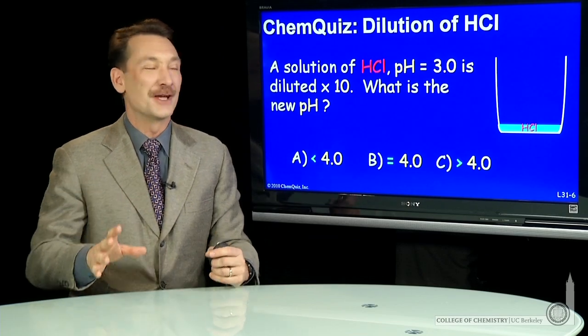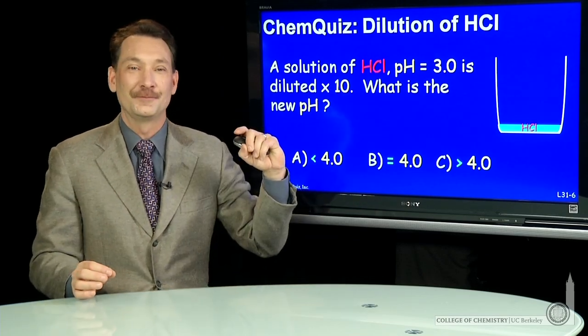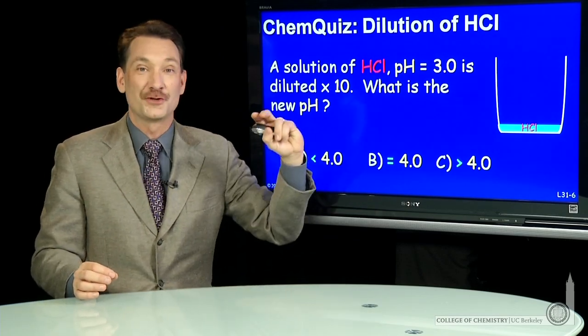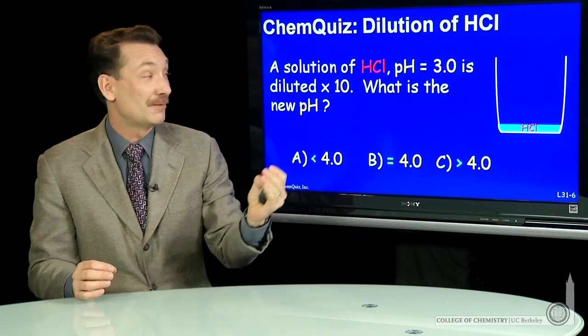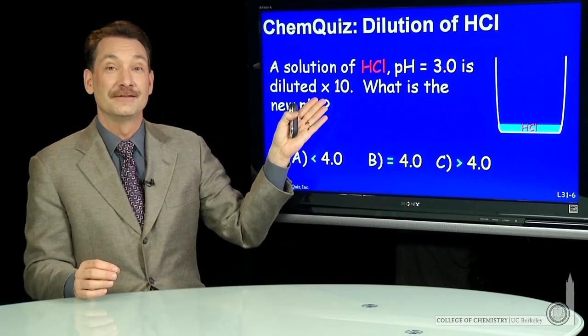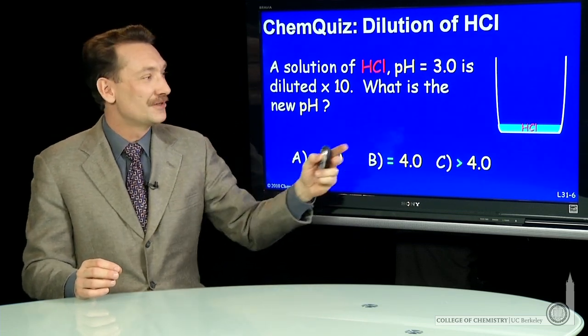Let's look at a situation where we take a strong acid, HCl, at pH 3, and dilute that by a factor of 10. What is the new pH?